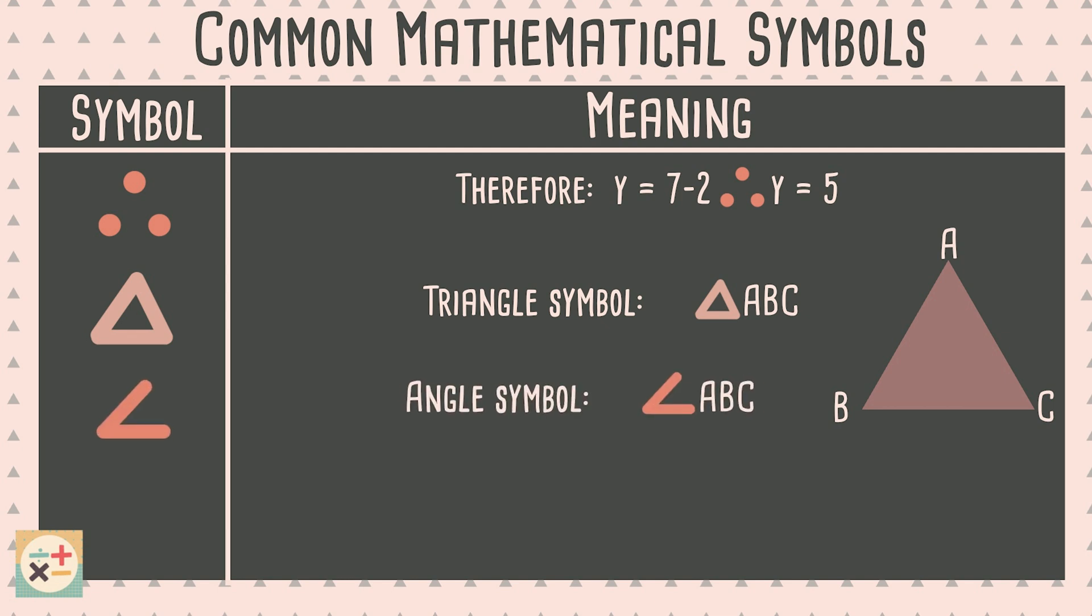The angle symbol is used to refer to a specific angle. The angle this represents is always the middle letter. In this example, the angle referred to would be at point B.